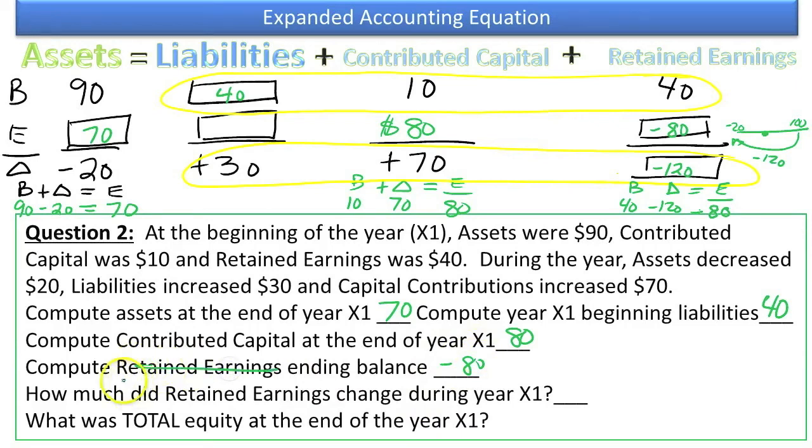So that's actually not even retained earnings. We actually call that accumulated deficit is the actual name for that in a corporation. Now, how much did retained earnings change? It went down $120, probably due to net losses or they could have paid out a lot of dividends, more than they should have. What was total equity at the end of the year X1? In order for this to work out, beginning of $40 plus the change of $30 equals the ending of $70.